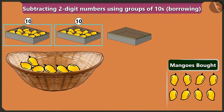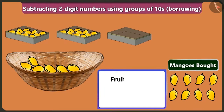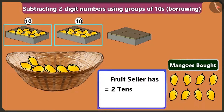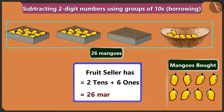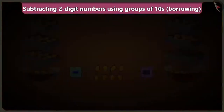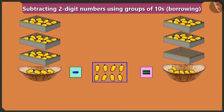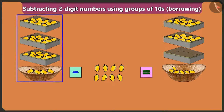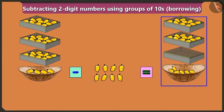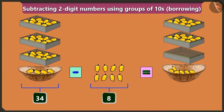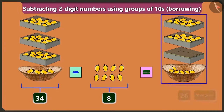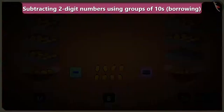Mommy, there are two boxes of ten mangoes each, and there are one, two, three, four, five and six mangoes in the basket. So the fruit seller would have two tens and six ones, means twenty-six mangoes left. Yes, so Bubbly, we subtracted eight mangoes from thirty-four mangoes, so now there are twenty-six mangoes. It means if we subtract eight from thirty-four, we would have twenty-six mangoes left.